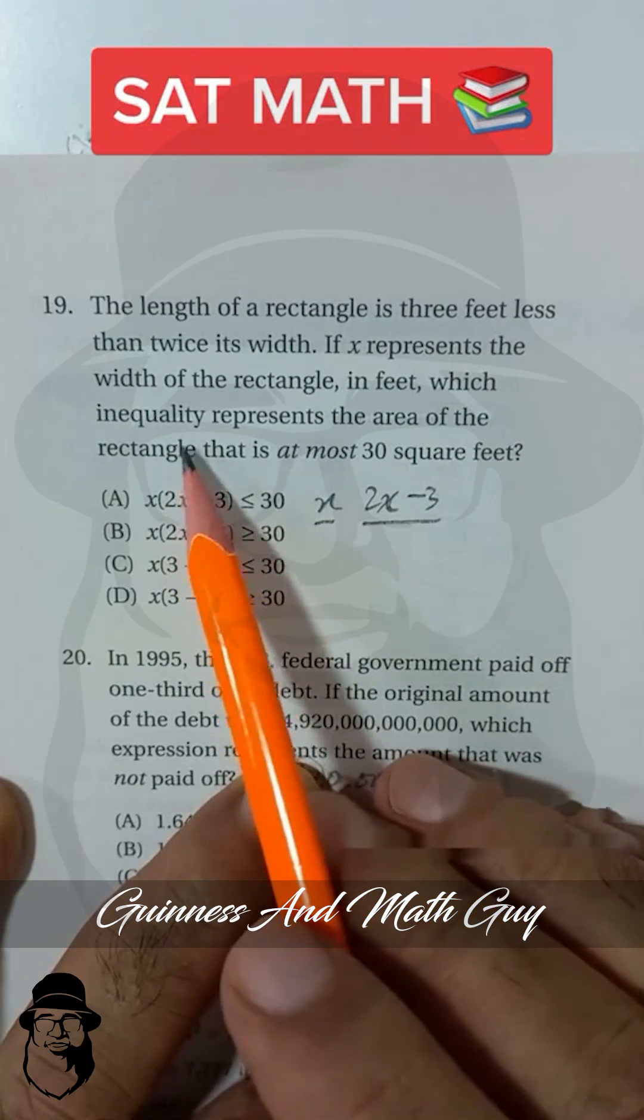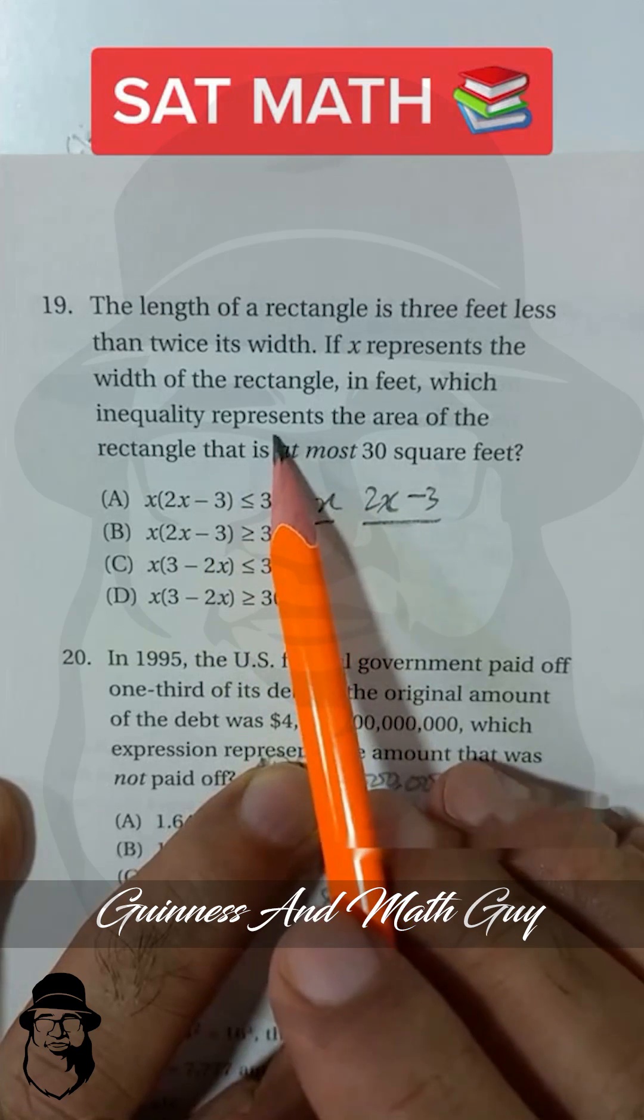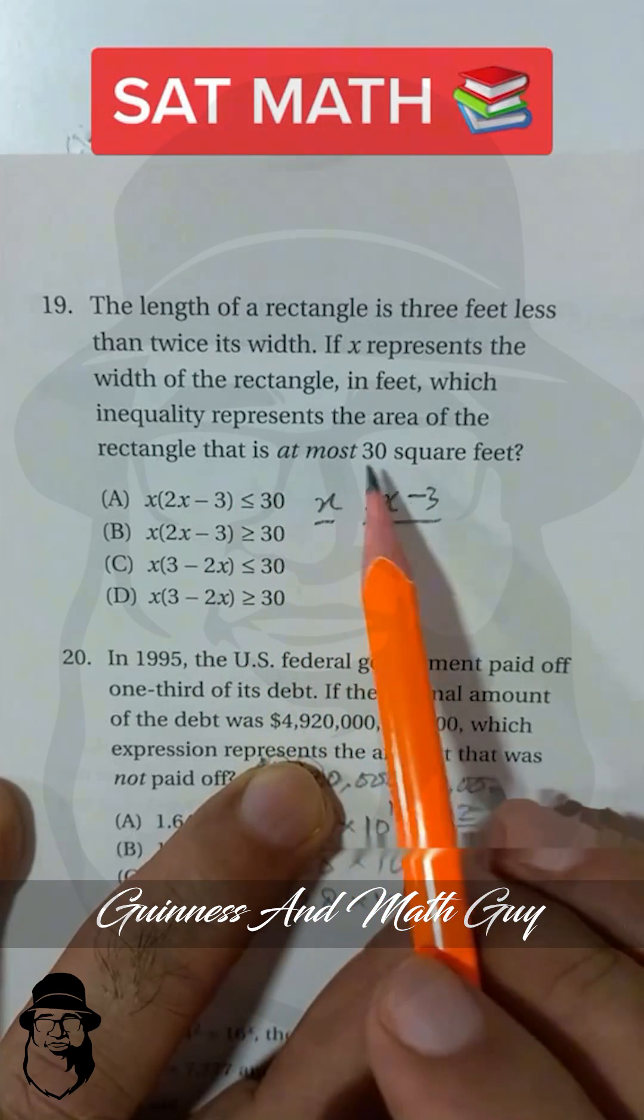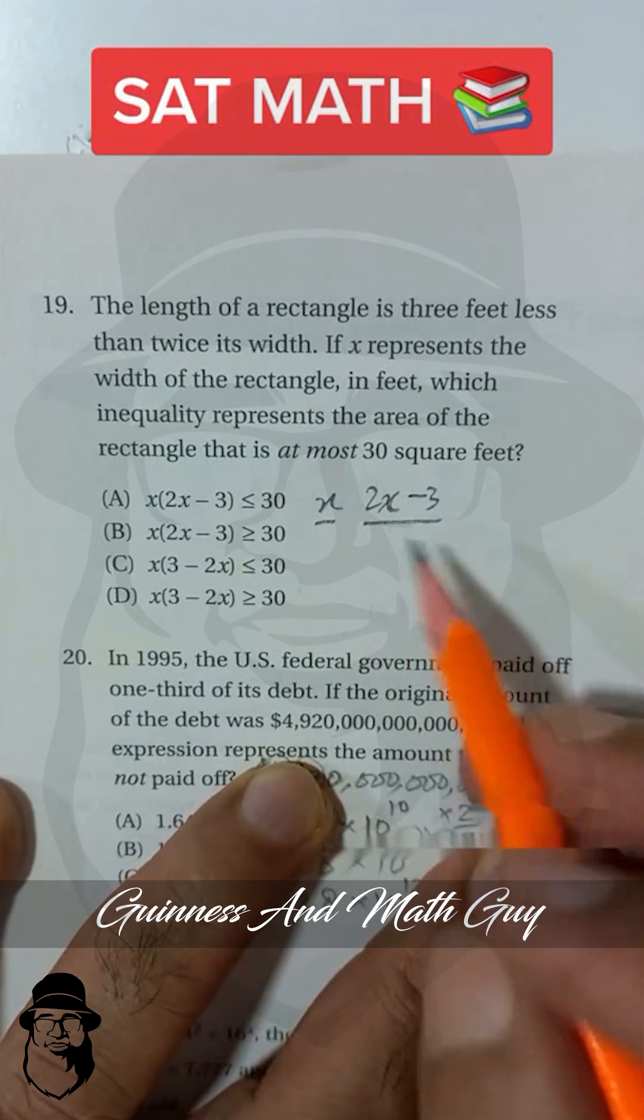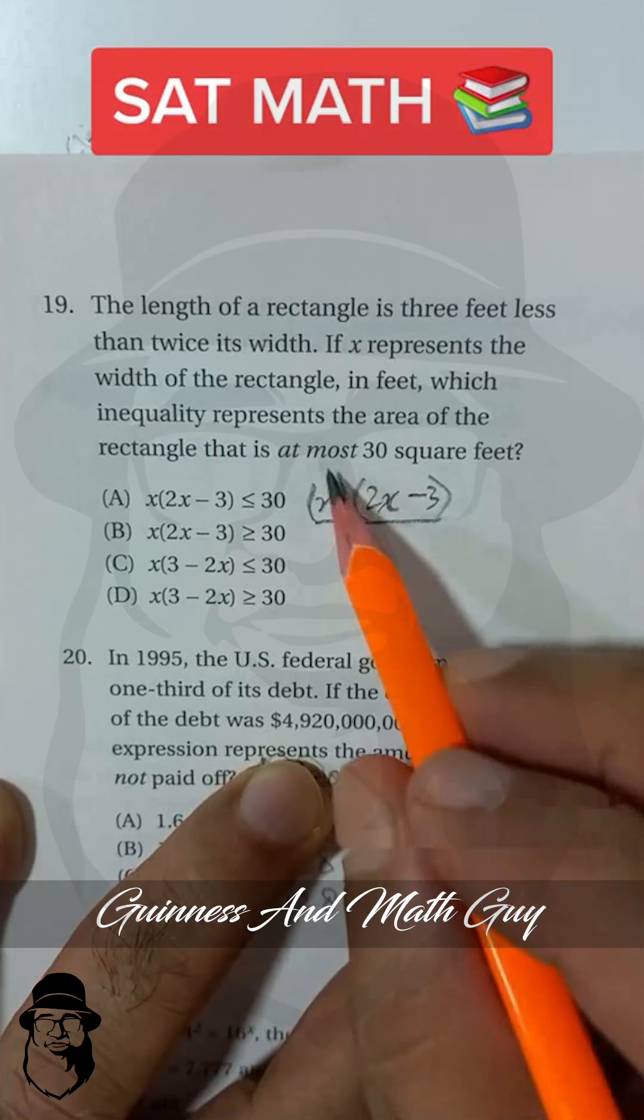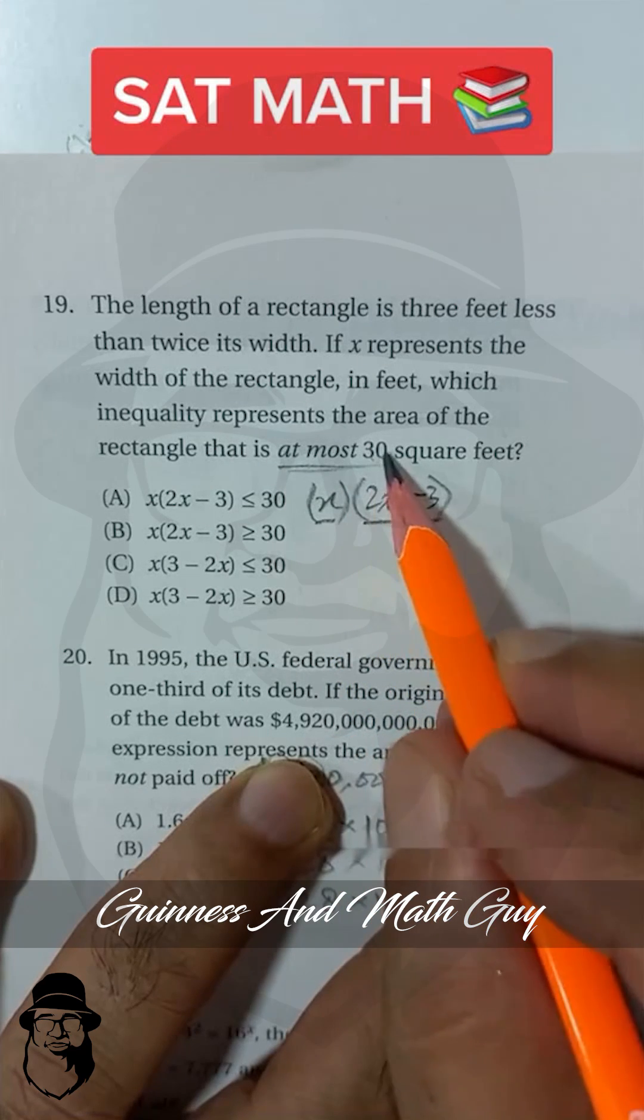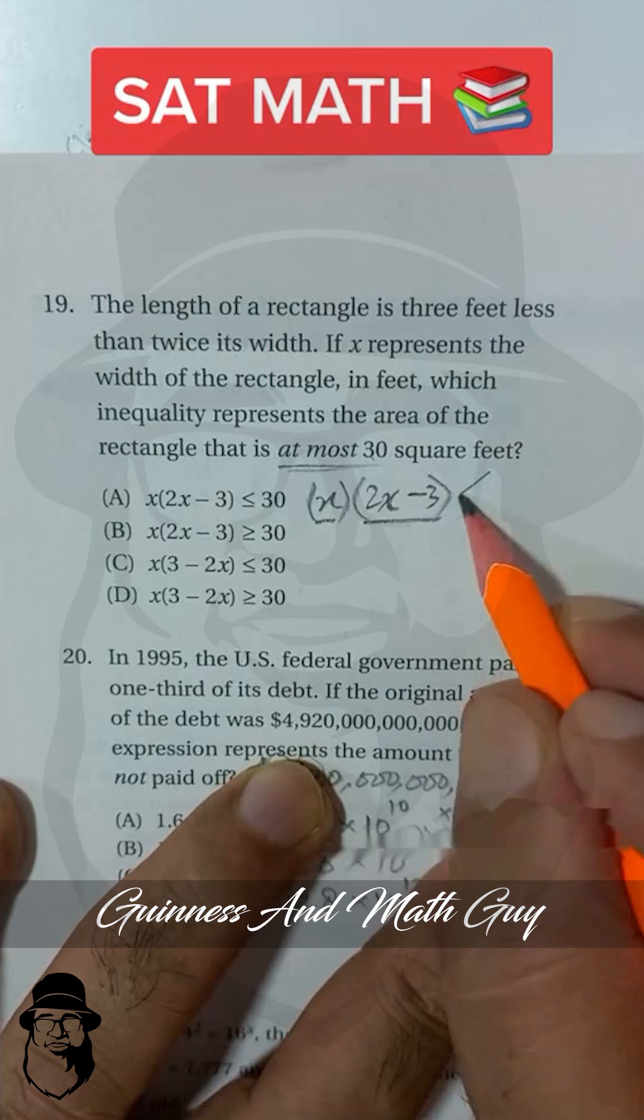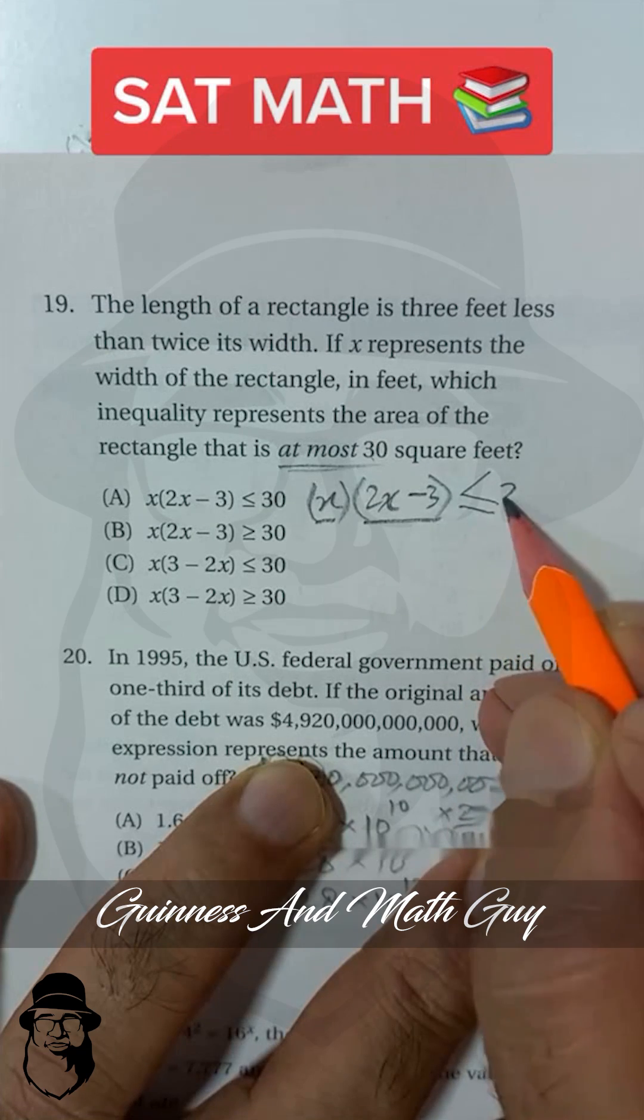Which inequality represents the area of the rectangle that is at most 30 square feet? Area is width times length, and at most means it cannot exceed 30 square feet. It has to be equal or less, so it is less than or equal to 30. That's choice A.